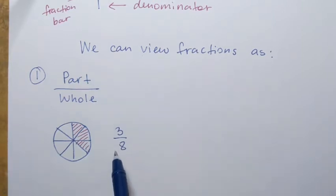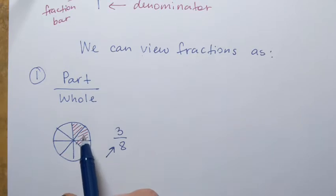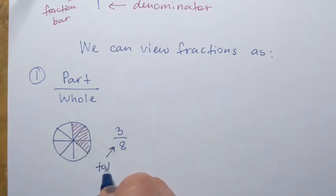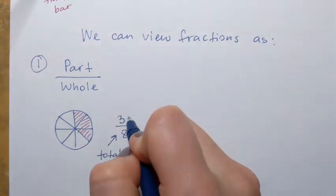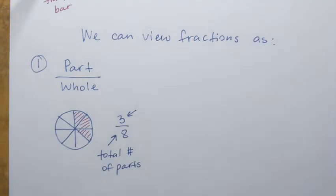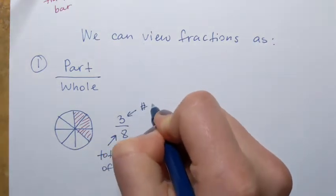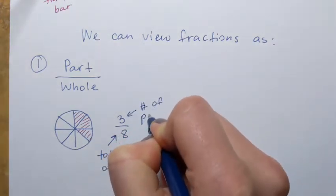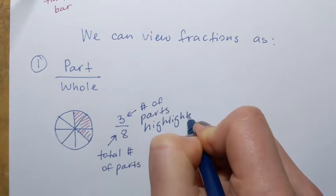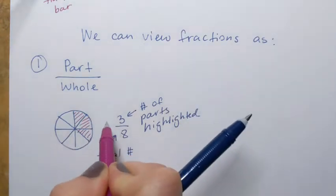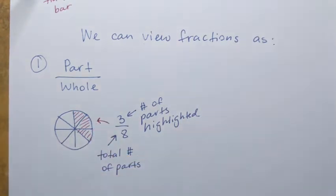The denominator will always represent the total number of parts in the whole — total number of parts, pieces, or slices, whatever word you find appropriate. And the numerator is the number of parts that we choose, or in this case the number of highlighted parts. So this fraction represents three-eighths — part of the whole.